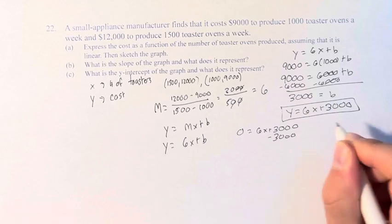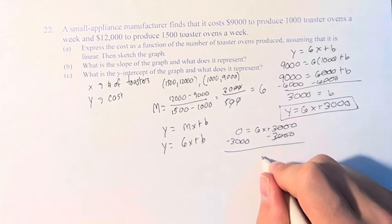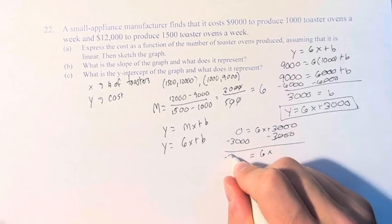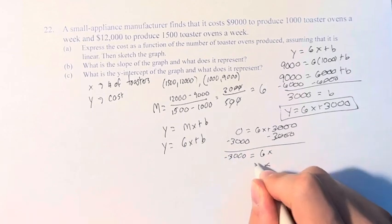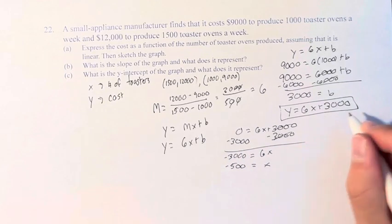Subtracting 3,000 from both sides, we get 6x is equal to negative 3,000. x is equal to negative 500. So therefore, we have the point.